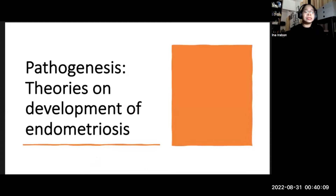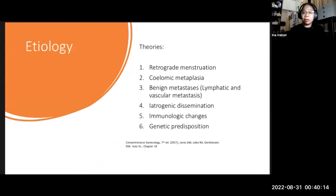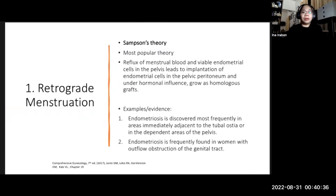Let us discuss some theories in the development of endometriosis. The theories include retrograde menstruation, coelomic metaplasia, lymphatic and vascular metastasis, iatrogenic dissemination, immunologic changes, and genetic predisposition. The most popular is Sampson's theory of retrograde menstruation — the reflux of menstrual blood and viable endometrial cells into the pelvis, leading to implantation of endometrial cells in the pelvic peritoneum, which under hormonal influence grow as homologous grafts.